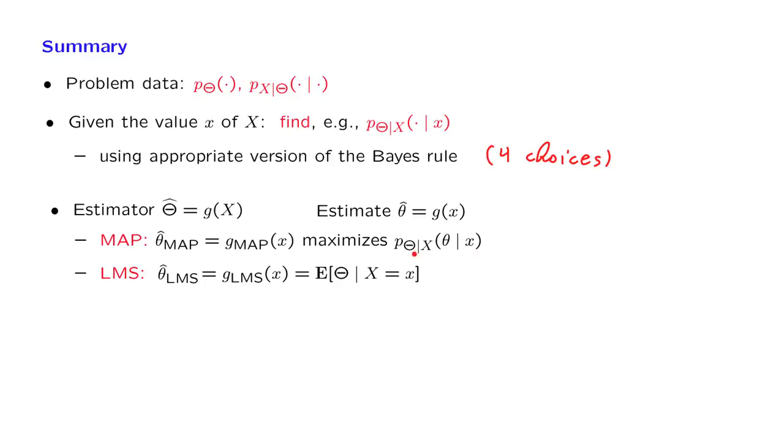So in the case where theta is discrete, this finds the value of theta which is the most likely one given our observation. And similarly, in the continuous case, it finds the value of theta at which the conditional PDF of theta would be largest.